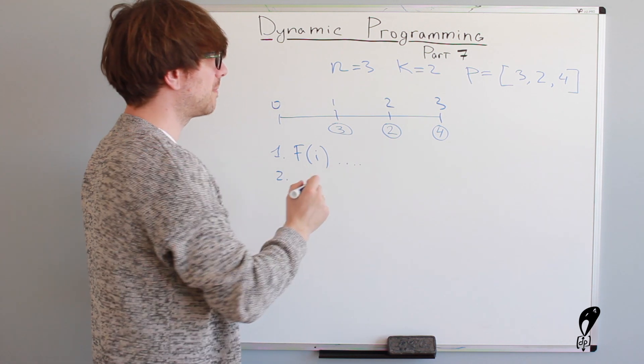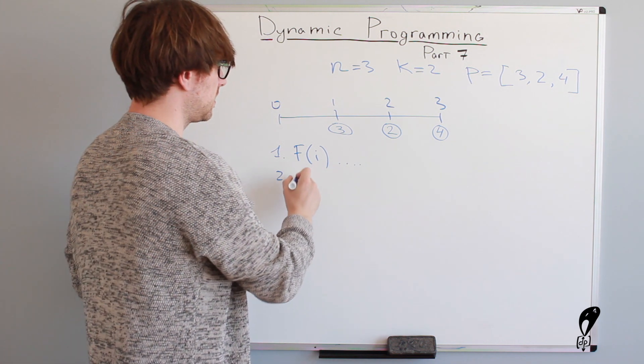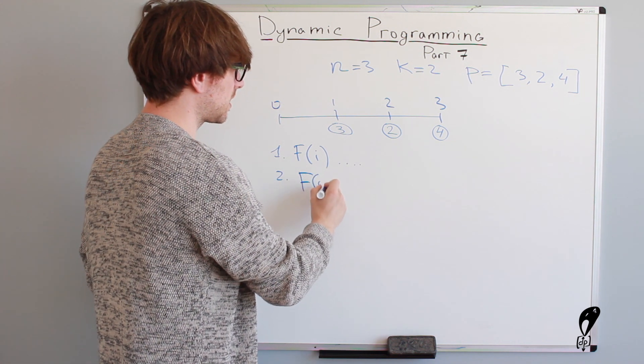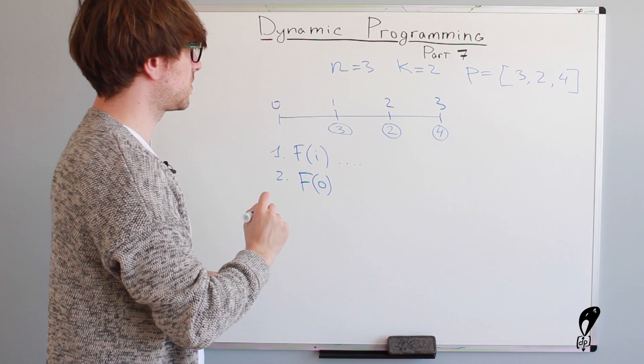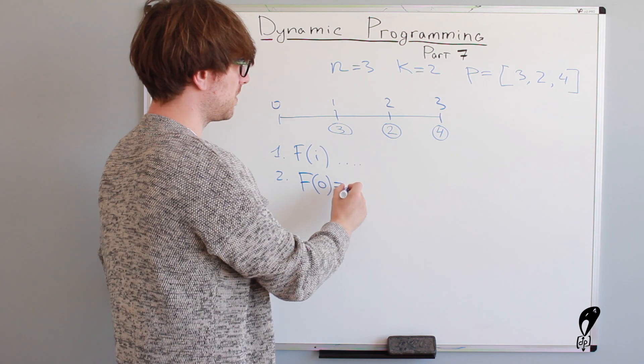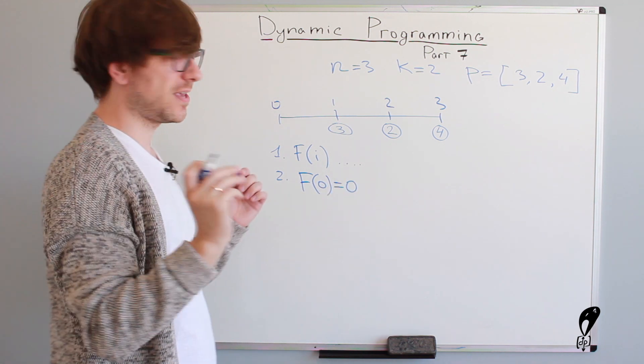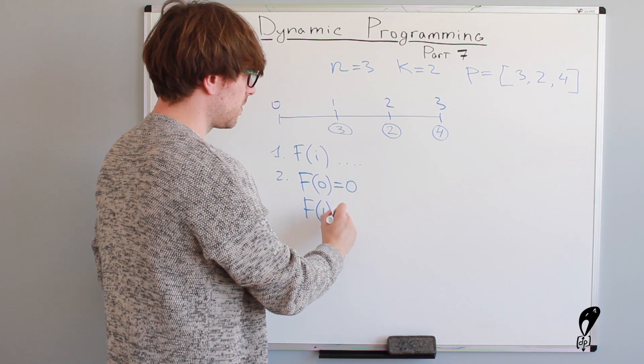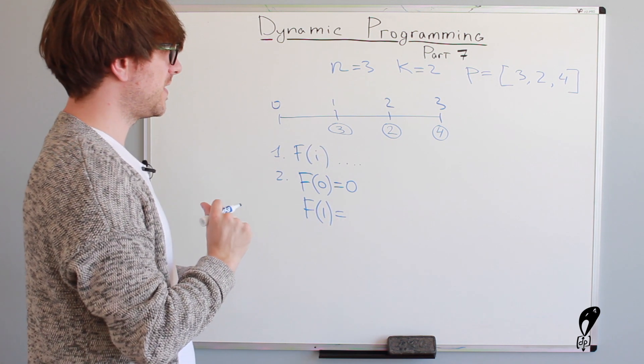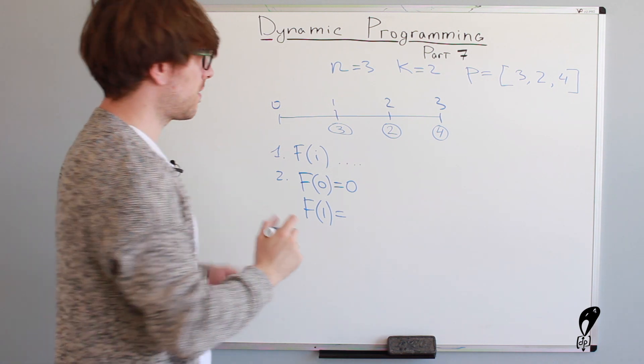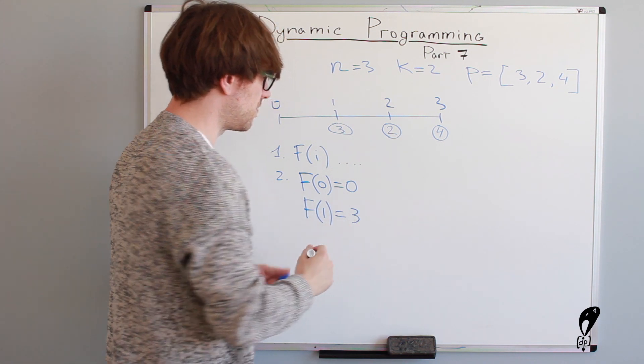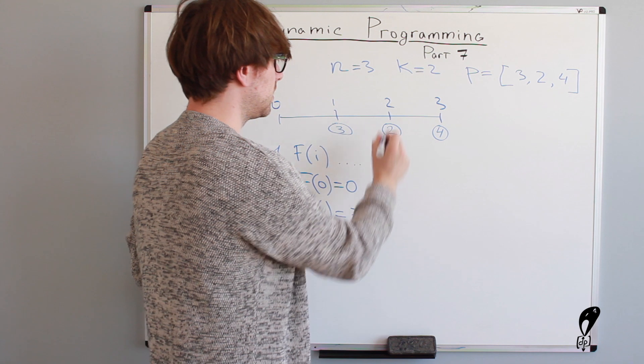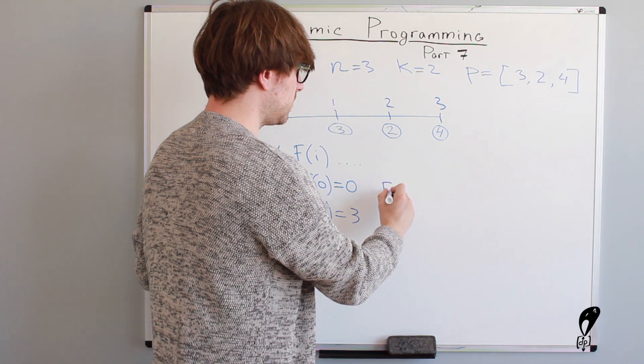Number two is identify base cases. So let's solve the problem when a computer is not even needed. F of zero. What is the cost to get to the zero step? It's zero because we don't have to pay anything. What about the first step? F of one is three dollars. So to get there would cost us three dollars. There is nothing else we can do.